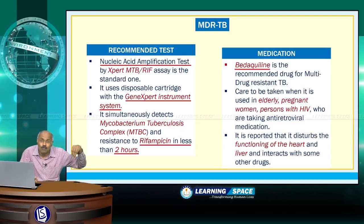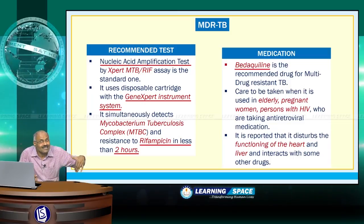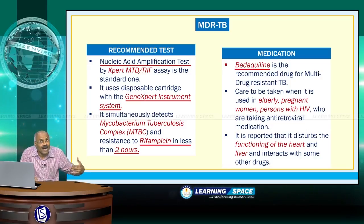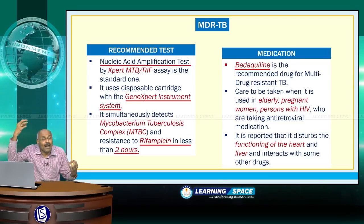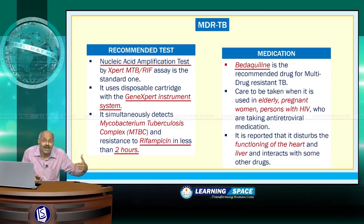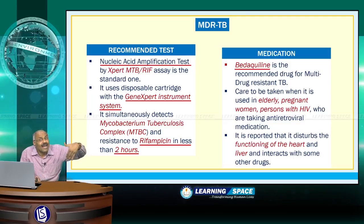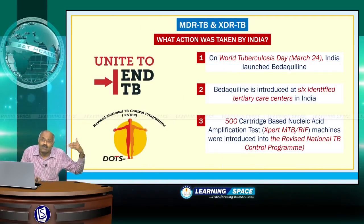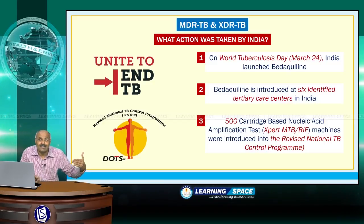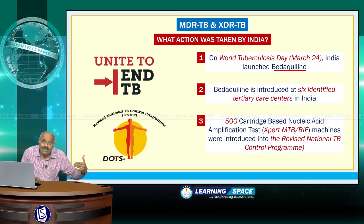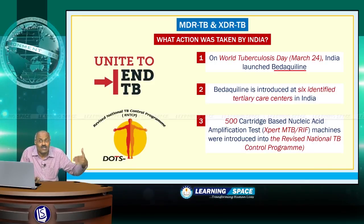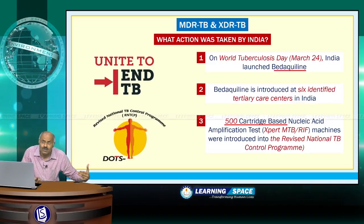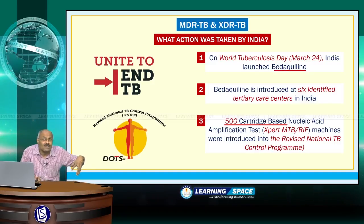Countries should take proper care in treating tuberculosis patients. It becomes highly difficult in countries like India where ignorance levels are very high, making transformation from tuberculosis into MDR-TB and XDR-TB quite common in underdeveloped and developing countries due to lack of proper education and awareness. In India, on World Tuberculosis Day, bedaquiline was launched and introduced at 6 identified tertiary care centers. Additionally, 500 cartridge-based nucleic acid amplification test machines were introduced into the Revised National TB Control Program.